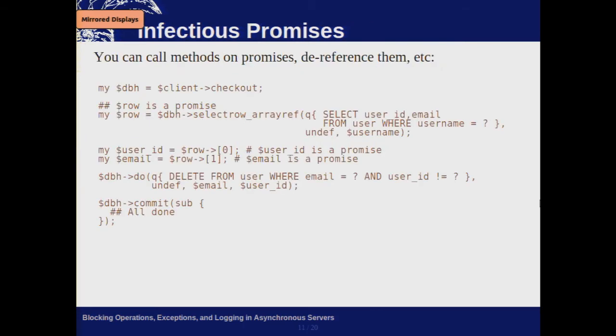Here's another thing I'm working on related to that: not only can you pass promises as arguments to other methods, but you can do all kinds of things on them — call methods on them, dereference them. I've got some Perl overload magic that makes it work. You can do DBI pretty well this way. Basically every promise operation globs on, becomes a larger promise, and you pass that whole thing over the network in one latency. Composability.